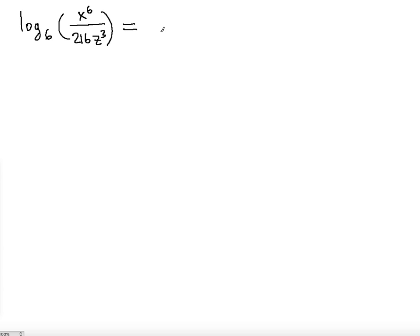So basically what this means is that we're going to have log base 6 of x to the sixth power minus log base 6 of the product of the bottom, 216z to the third.